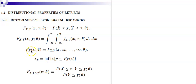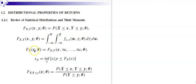If X is a vector of fixed values X1, X2, X3, this is the probability that the first component of X is smaller than x1, the second component smaller than x2, the third smaller than x3, and so on up to the dimension of X.